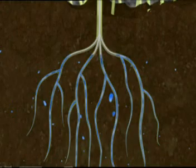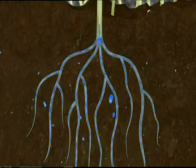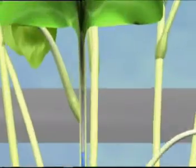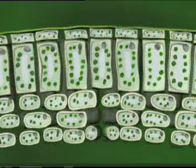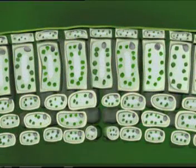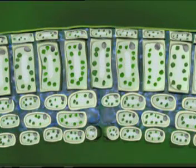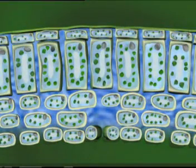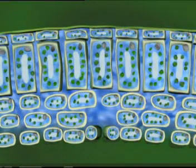Water travels up the stem to the leaves in tubes called xylem. Once in the leaf, the water passes into the cells and enters the chloroplasts, where it meets the carbon dioxide.